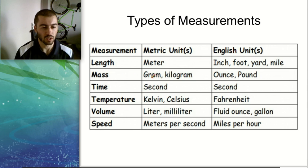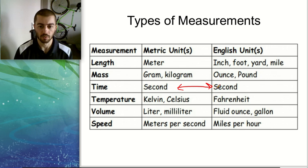For mass, you'll use the gram or the kilogram depending on your applications. The time we're going to measure in seconds, this is common between both the English and metric system. In temperature, we're going to use Kelvin or Celsius for the metric system. Volume, we'll use liters or if it's small, milliliters. And speed, we'll measure in meters per second.